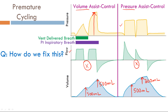How do we fix premature cycling? We want to improve synchrony, and the only way to do that is by increasing inspiratory time. If you extend the green line out, you will help promote synchrony. In order to increase inspiratory time, you have to know what mode of ventilation the patient is in, because increasing inspiratory time means manipulating different variables in different modes.